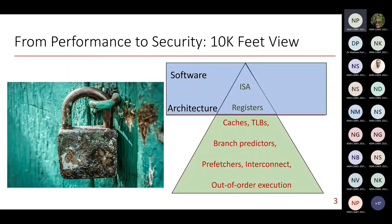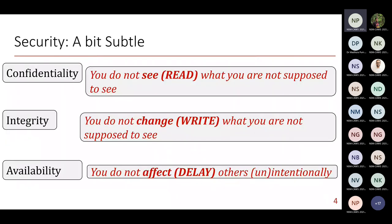Now we will see why all these microarchitectural techniques proposed over the last three or four decades are creating a new headache for the security community. Before jumping into the security aspects of microarchitecture, here is a 101 definition of what it means when someone says something is secure. There is a standard definition called the CIA definition, which stands for Confidentiality, Integrity, and Availability. Confidentiality can be correlated with a process or application.